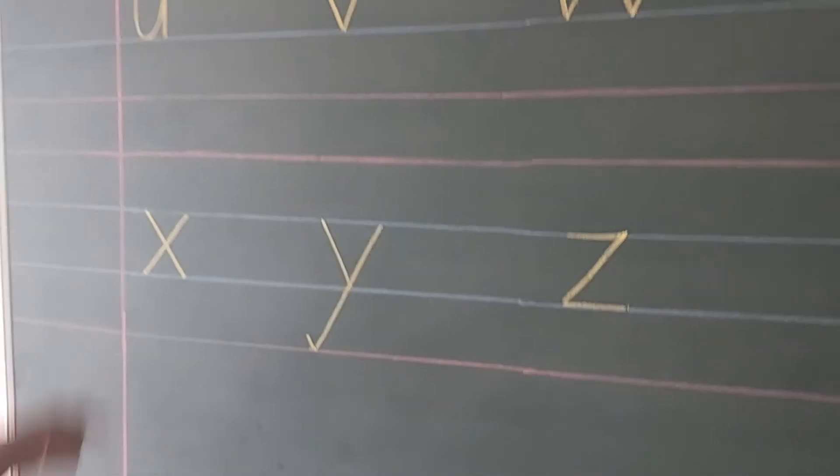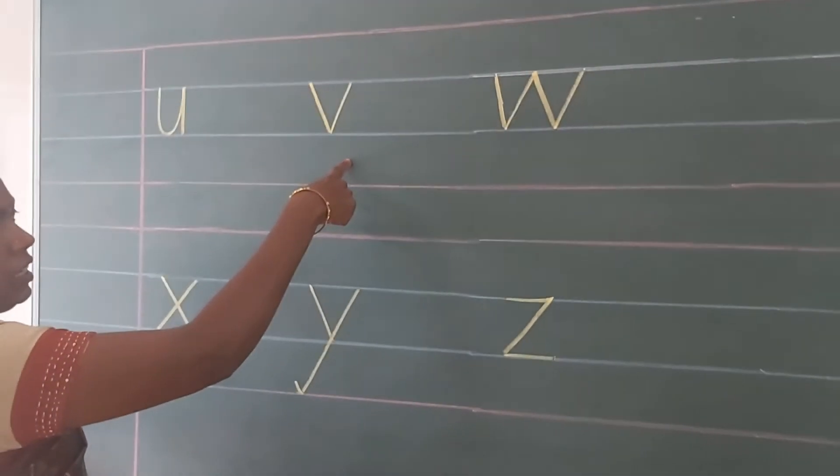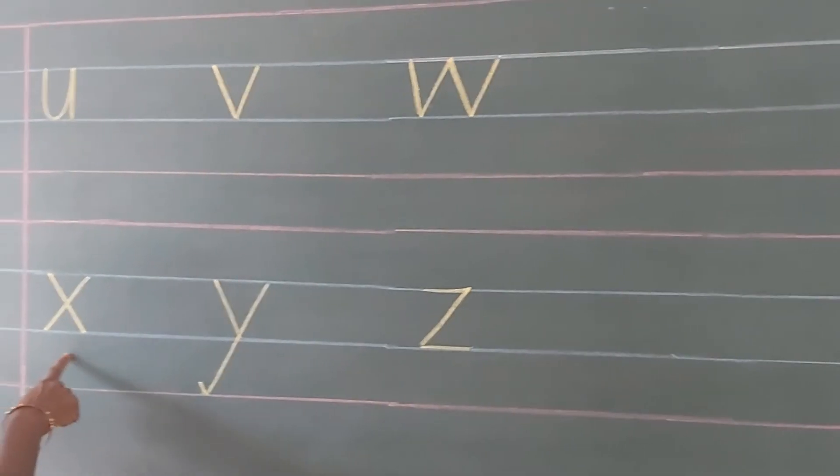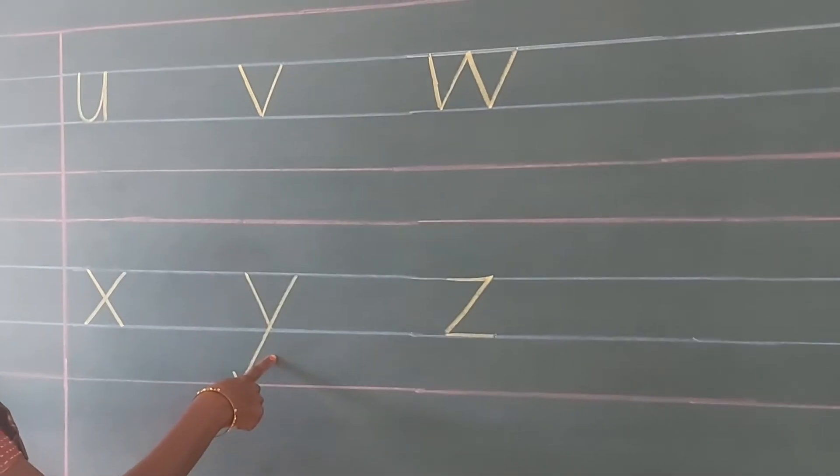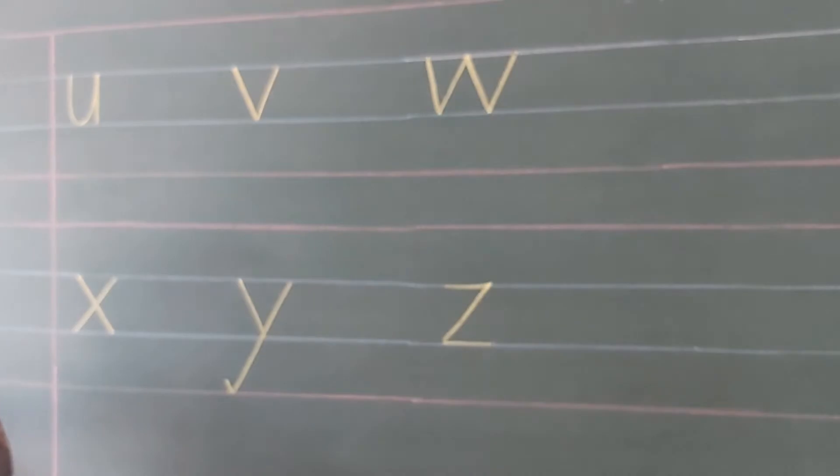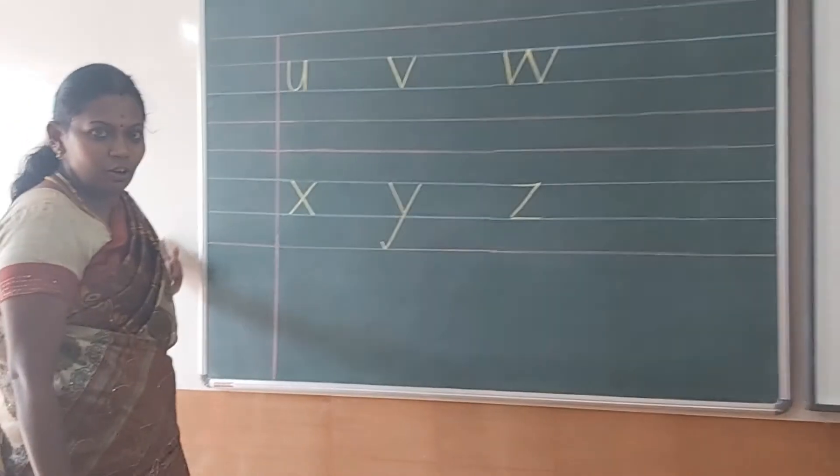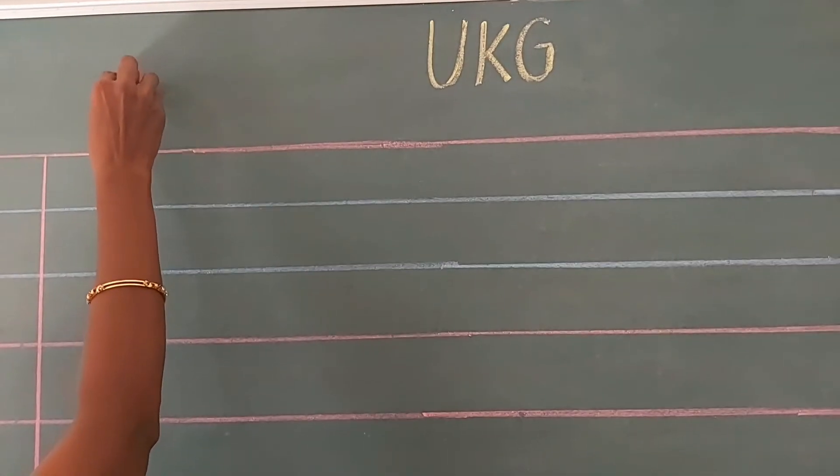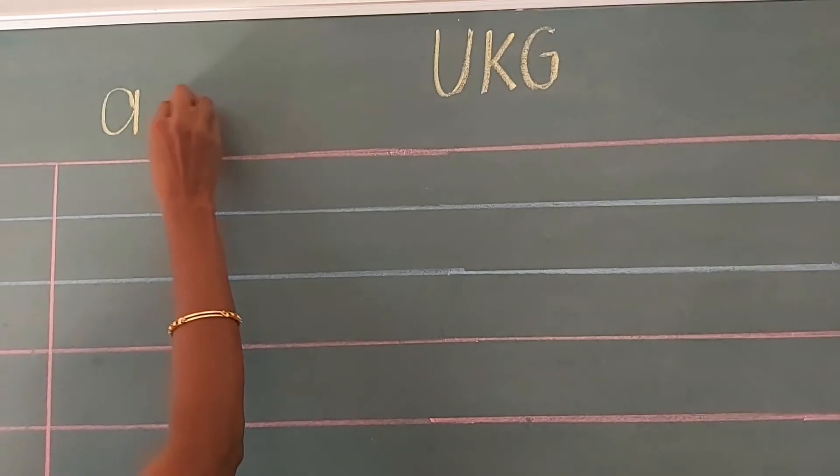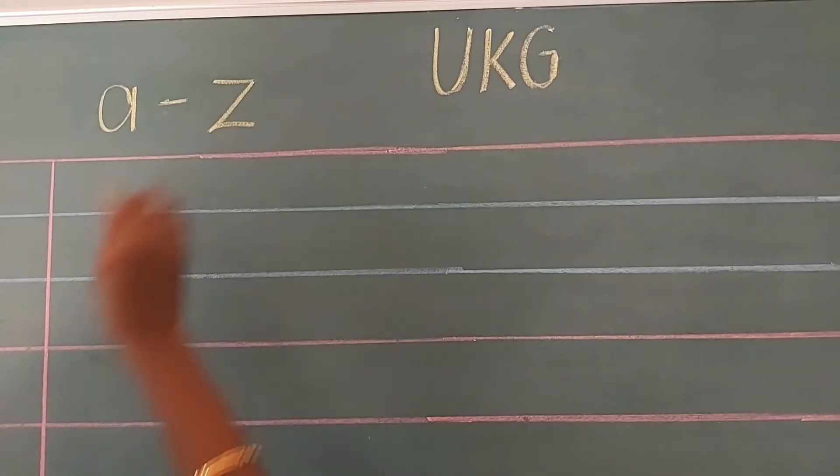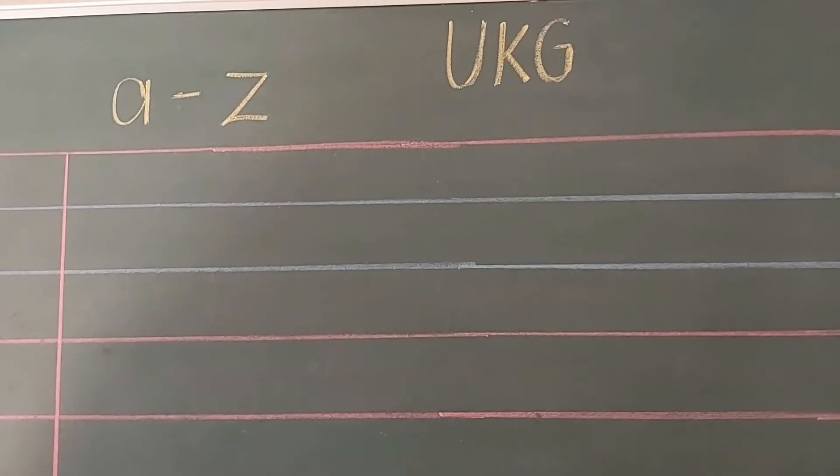Okay, Kanna? U, V, W, X, Y, Z. Now I am going to write all the letters from A to Z. Okay? Now shall we write the letters from A to Z? Okay? Take your forward number and write along with me.